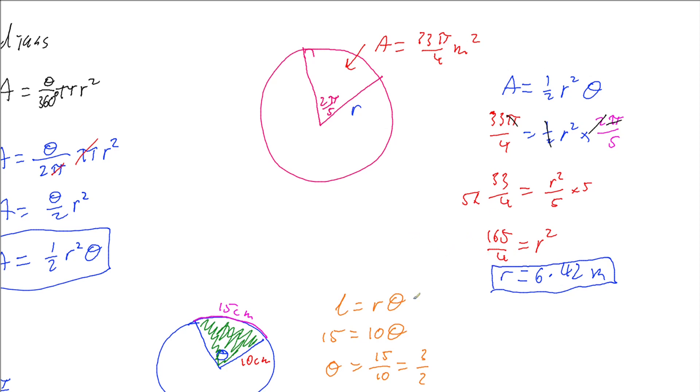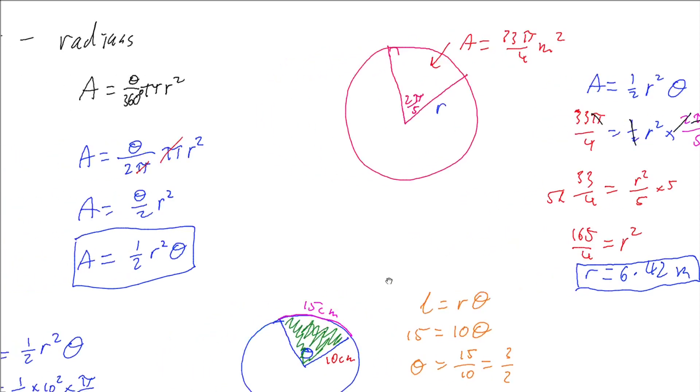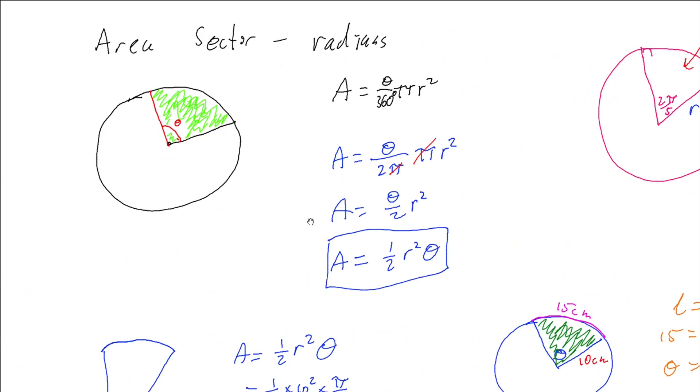So we can answer all sorts of questions. But it mainly comes down to if we need the area of a sector or something to do with the area of the sector and our angle is in radians, then we can just use a half times the radius squared times the angle.